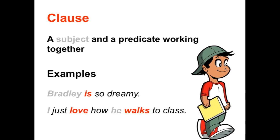Here is an example of a sentence with two clauses: 'I just love how he walks to class.' There are two predicates in this sentence: 'love' and 'walks.' But each takes a different subject. The subject in the first clause is 'I' — I love. But the subject in the second clause is 'he' — he walks. So while this is just one sentence, it is a sentence with two clauses: one subject and one predicate working together, followed by another subject and predicate working together.